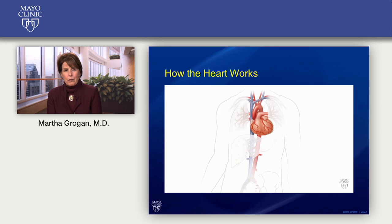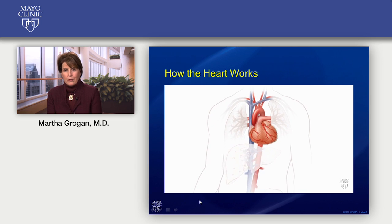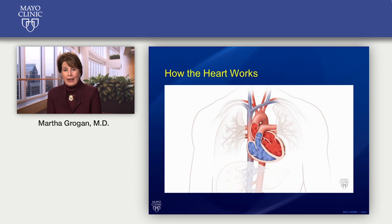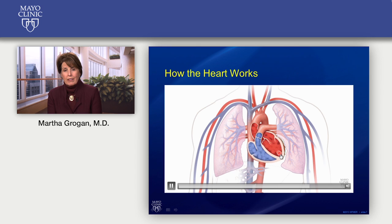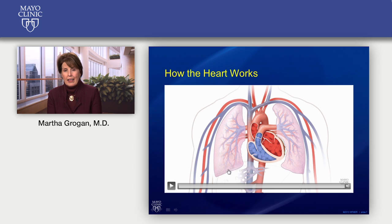The heart pumps blood — it's pretty amazing, it actually pumps 2,000 gallons of blood a day. Valves in the heart keep the blood going the right way. Blood comes back from your body with the oxygen used up — we call it blue blood — and it comes back to the right side of the heart, then it's pumped out to your lungs where it picks up oxygen, becoming red blood. It comes back to the left side of the heart through a valve, then to the left ventricle, which pumps blood throughout your whole body — up to your brain and through your aorta to your kidneys and your whole body. The heart is divided into right and left sides so that blue blood low in oxygen doesn't mix with red blood high in oxygen.